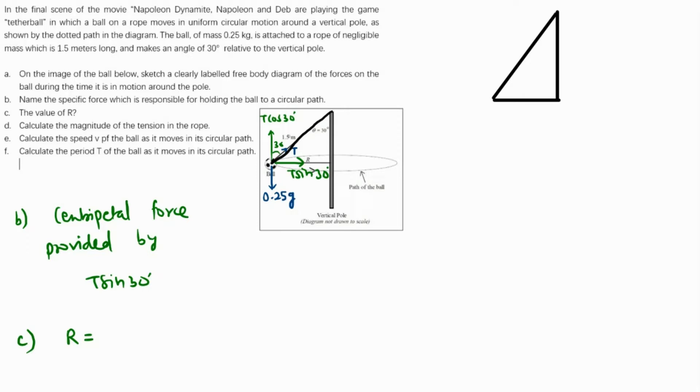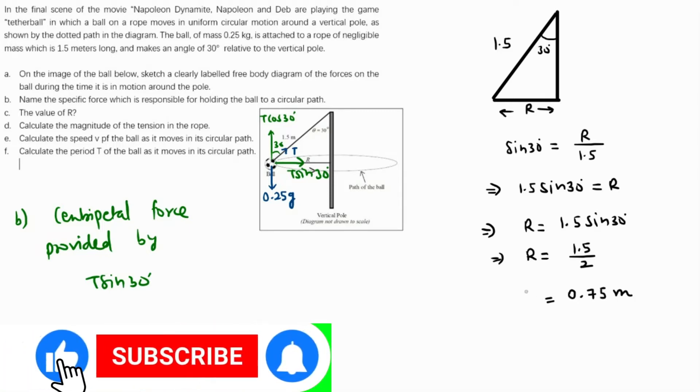The length of the string is 1.5 and the angle is 30 degrees. Clearly I can use sine because sine of 30 degrees will be opposite which is R over hypotenuse which is 1.5. If we cross multiply, then 1.5 sine 30 equals R. We know that sine 30 is 1 over 2, so this becomes 1.5 over 2, which is 0.75. That is the value of R.